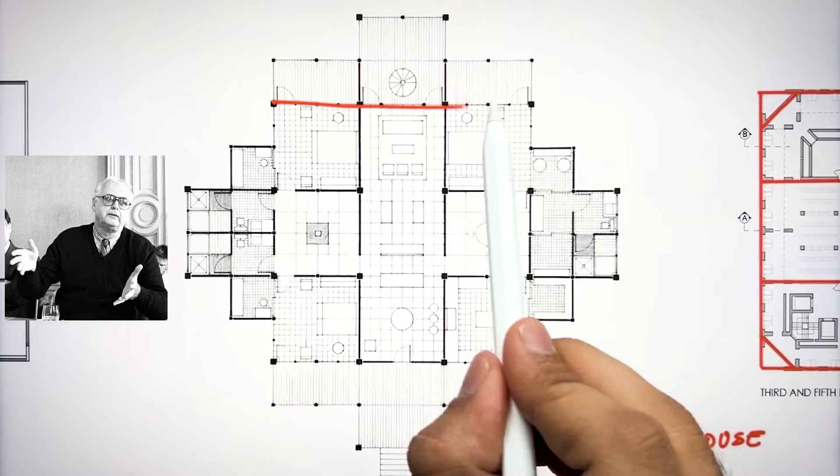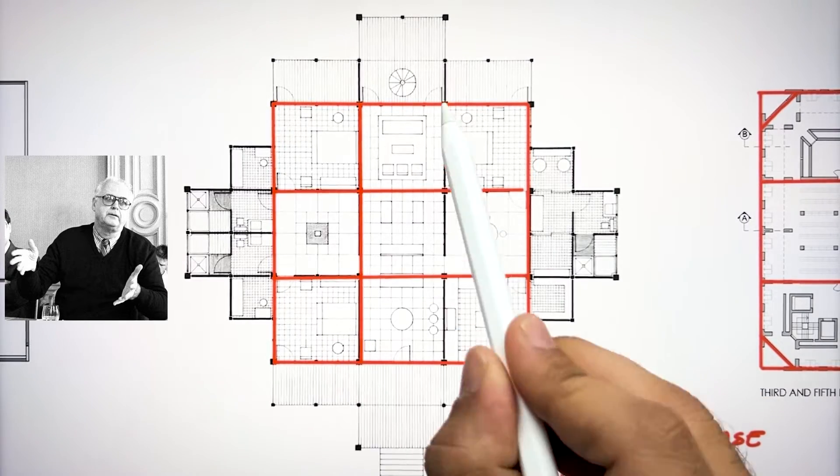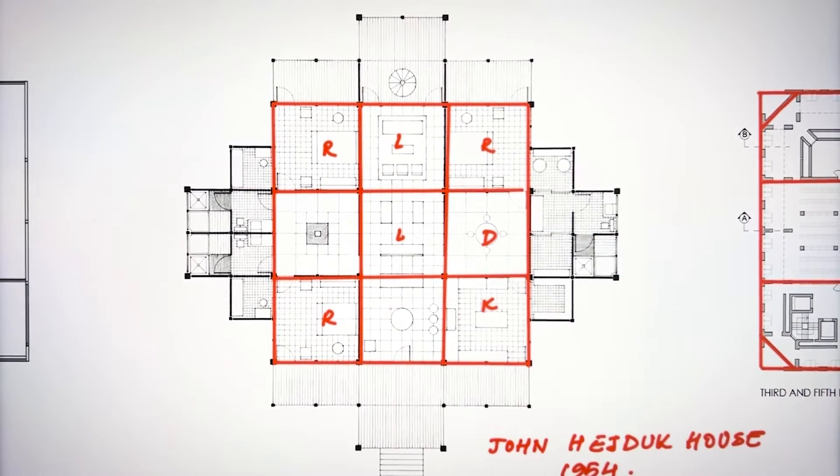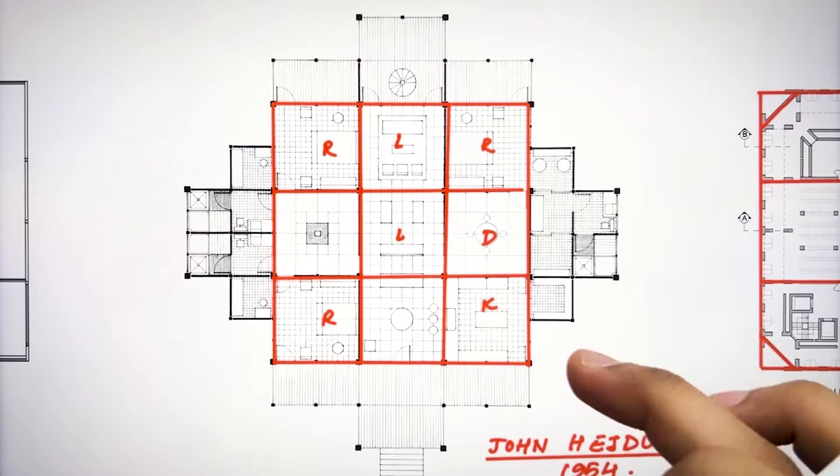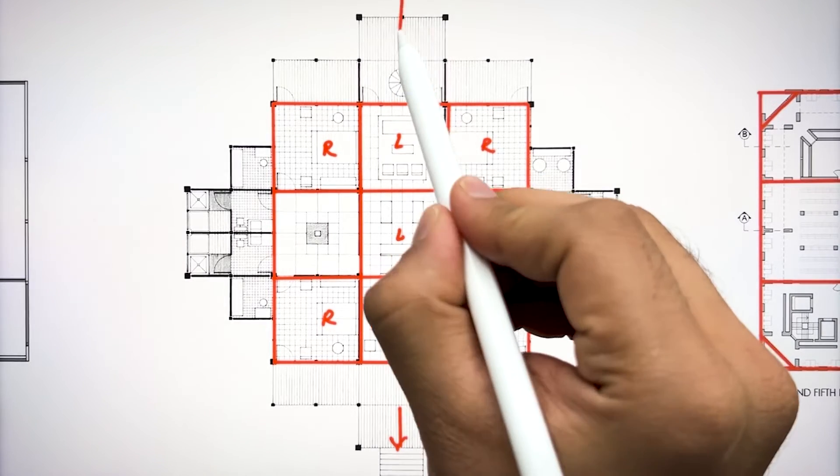John Hejduk, who was the great master of the 20th century and also the expert of the nine grid system. He also designed many houses using the same concept of nine grid where he extended the spaces outward in 1954.